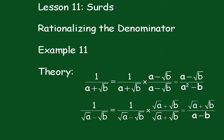Lesson 11: Surds - Rationalizing the Denominator. Example 11. Now this particular type here, you've got two terms in the denominator position separated by a plus sign.